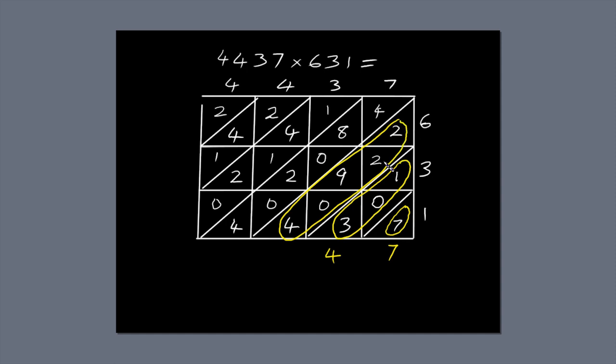2 plus 2 is 4. Plus 9 is 13. 1 plus 4 is 15. Plus 4 is 17. Write the 7 below the diagonal and carry the 1 across to the next diagonal. 1 plus 4 is 5. Plus 8 is 13. Plus 2 is 15. 1 plus 4 is 19. Write the 9 below the diagonal and carry the 1 over to the next diagonal.